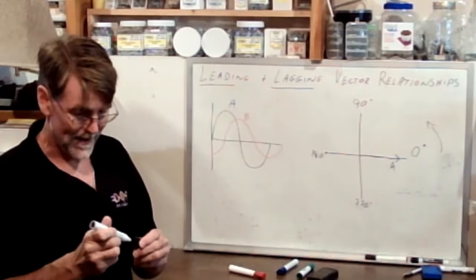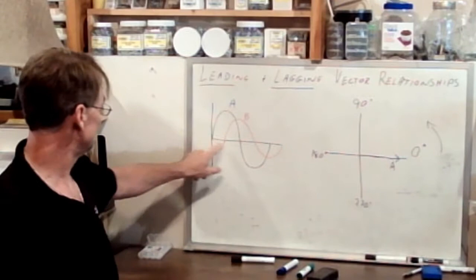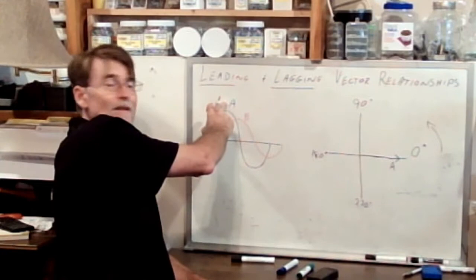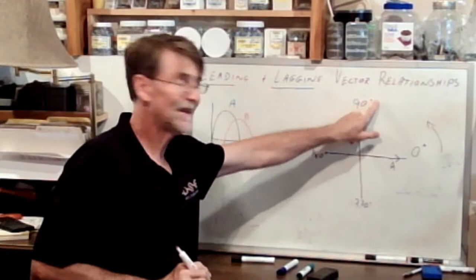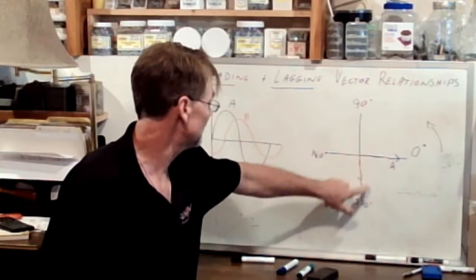That is vector A representing waveform A. Now waveform B is delayed. So it starts at sine wave 90 degrees after A does. And so I'm going to draw vector B lagging vector A by 90 degrees. If this is forward direction, lagging behind means that vector B is going to be down there. So there's a 90 degree phase shift between vector A and vector B.